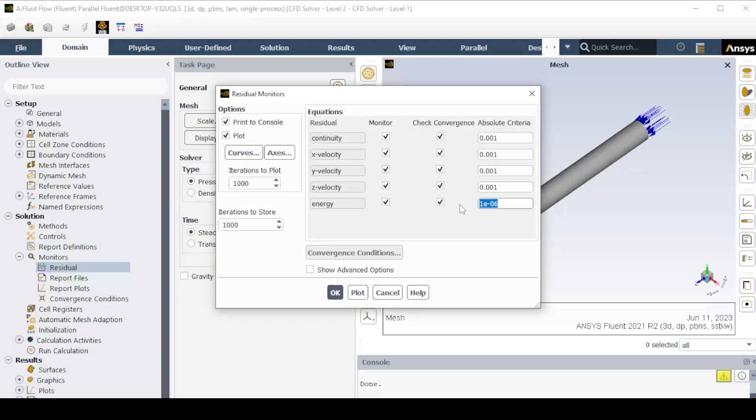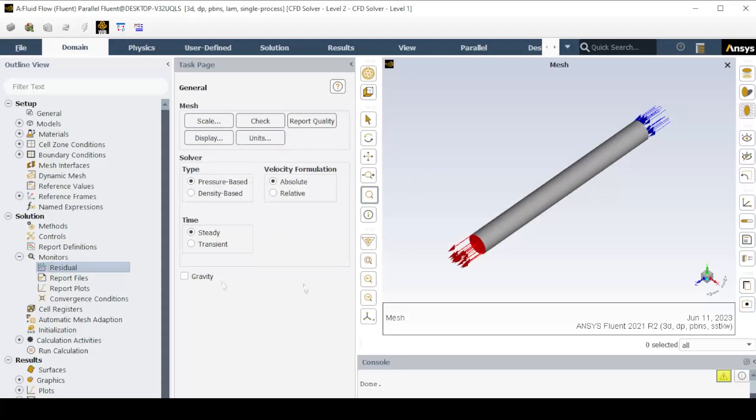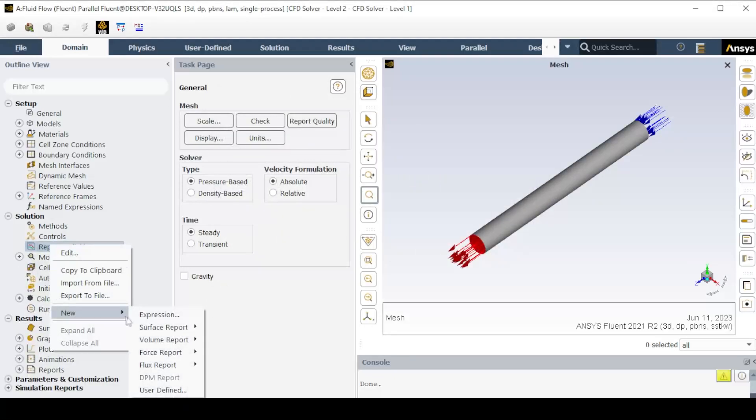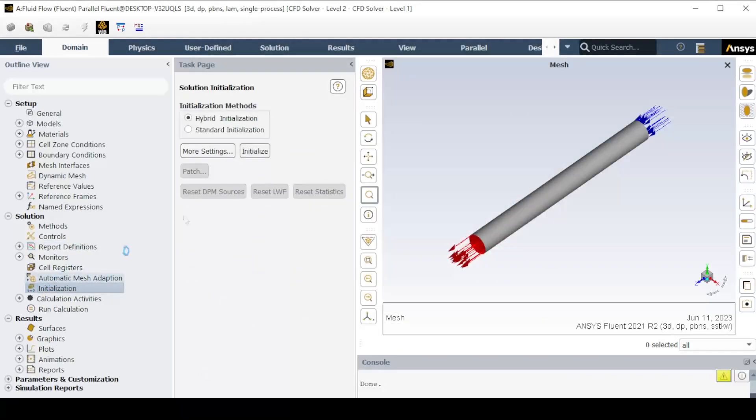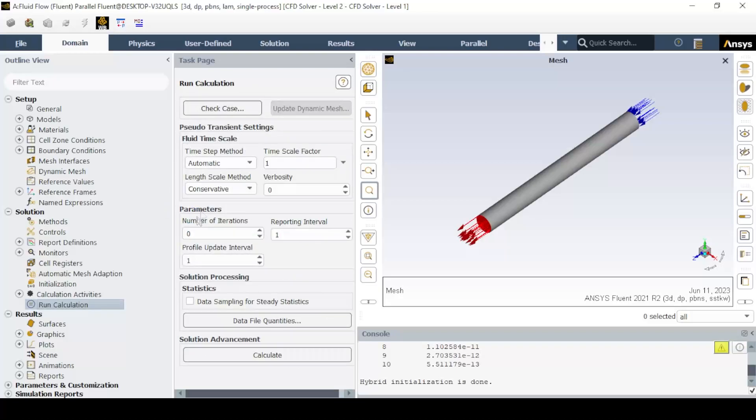Method and control are set to default. In Monitor, change residual to 10 to the minus 6 for better convergence in results. Create report definition of exit temperature which will also serve as convergence criteria. Initialize the solution with hybrid initialization, and run calculation. Set number of iterations to max value, and run until the solution converges.